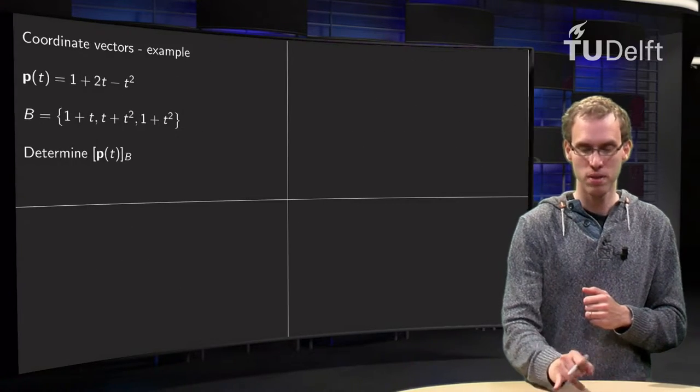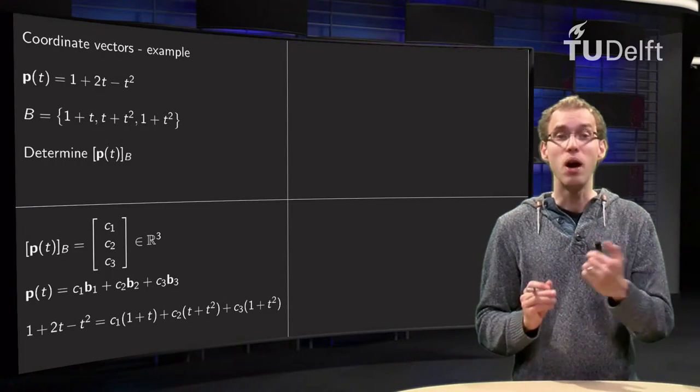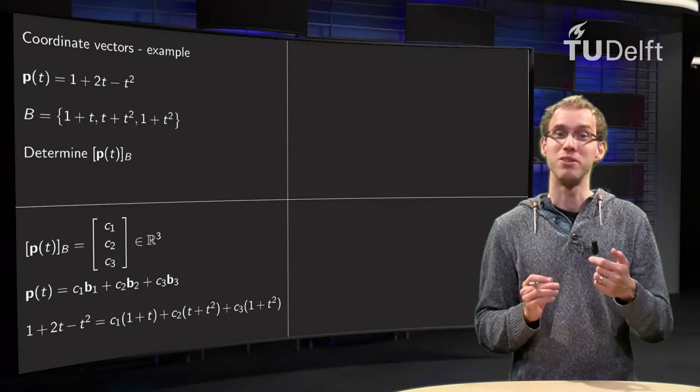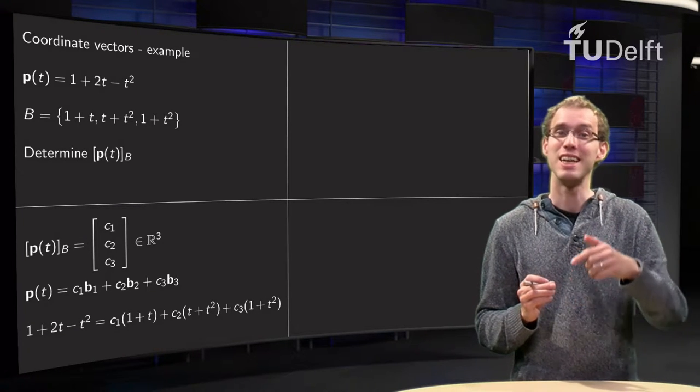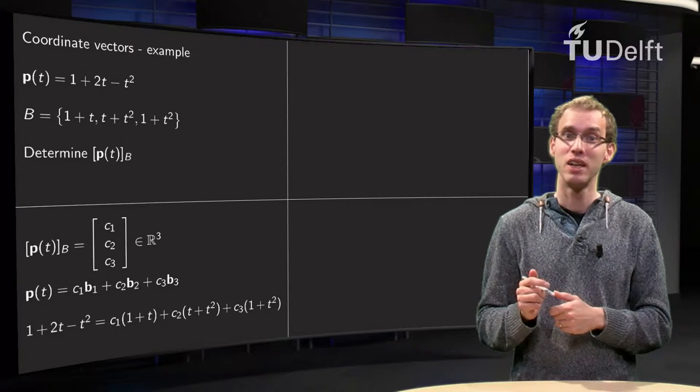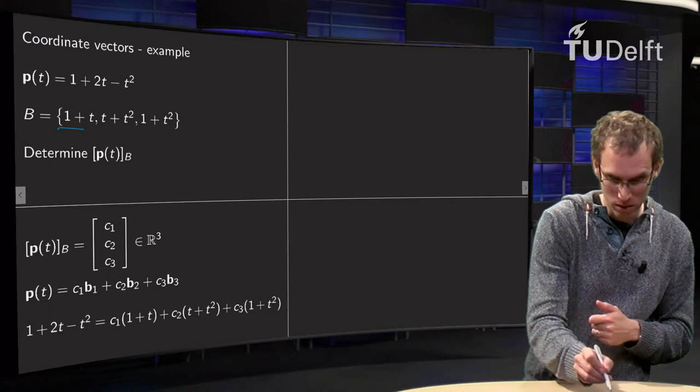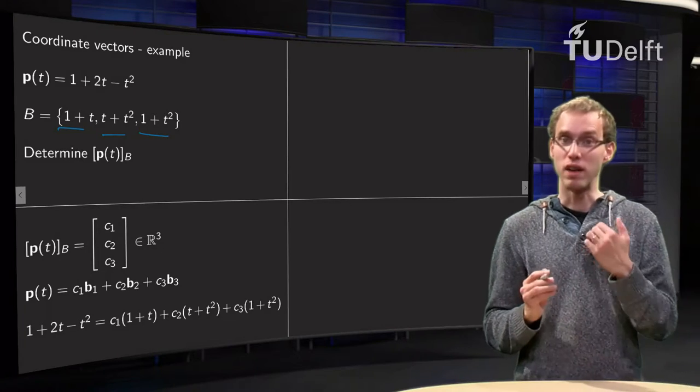So how can we do that? We know that our coordinate vector contains the same number of weights as the number of vectors in the basis. The basis contains 1, 2, 3 vectors.